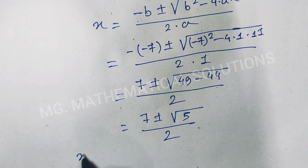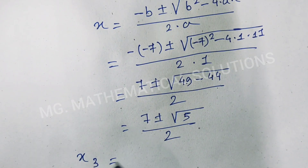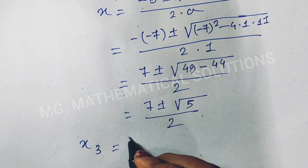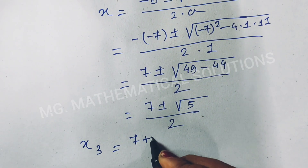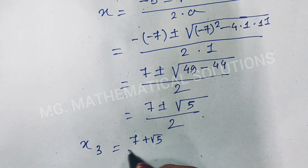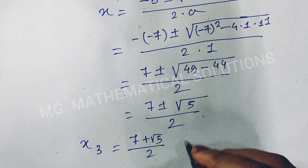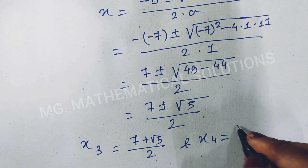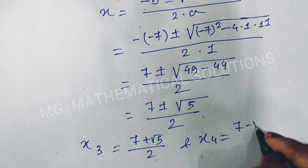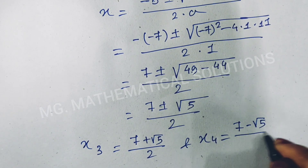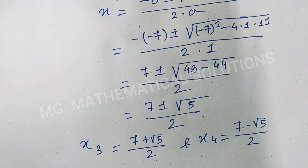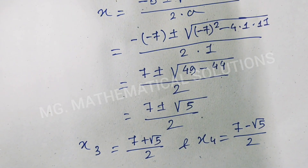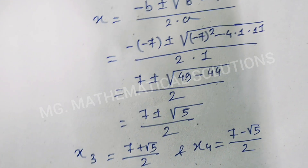So x3 equal to (7 plus root 5) / 2 and x4 equal to (7 minus root 5) / 2. So this is the final answer.